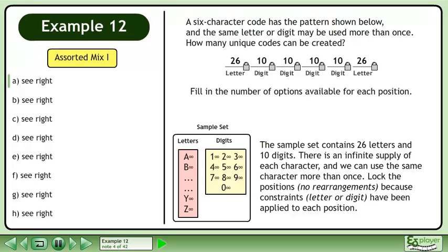Fill in the number of options available for each position. Multiply the numbers to get 6,760,000 possible codes.